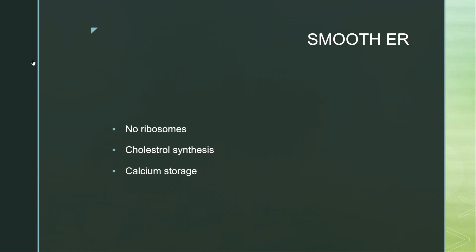The next one is smooth endoplasmic reticulum. The smooth endoplasmic reticulum does not have ribosomes attached. Therefore, it is called smooth endoplasmic reticulum, also referred to as tubular endoplasmic reticulum.